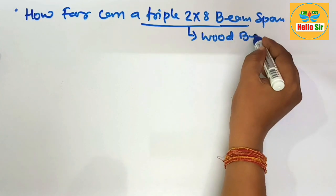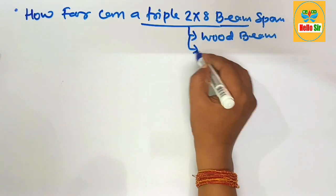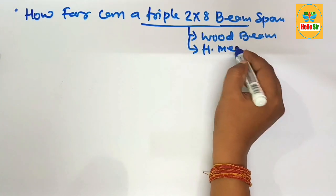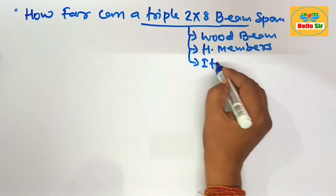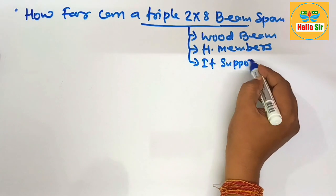This is a wood beam, and you know that it is a horizontal member in roof framing system. It supports load coming from roof and subfloor area.